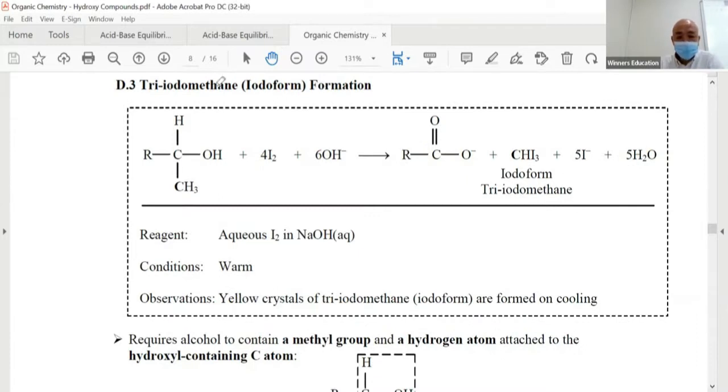The reaction is called triiodomethane formation, also known as iodoform reaction, which is basically this thing that is formed comes from the methane backbone. The hydrogen has been replaced by iodine, three iodine, that's why it's called triiodo. I'm telling you all this so it's easy for you to remember. It has a common name, it's called iodoform.